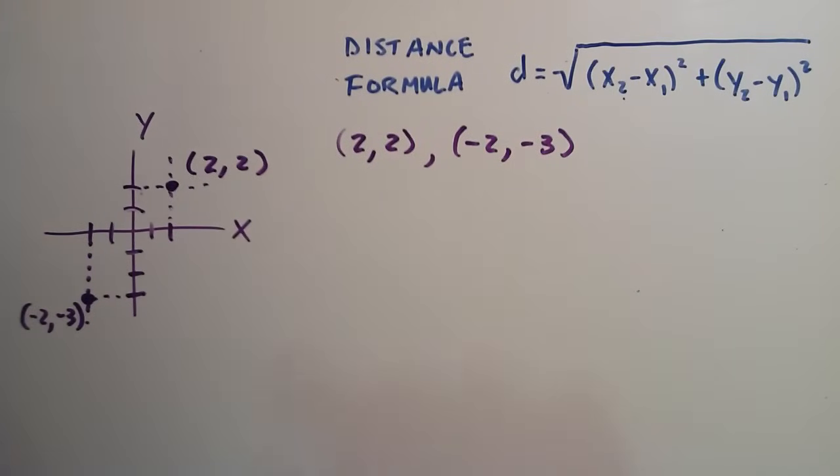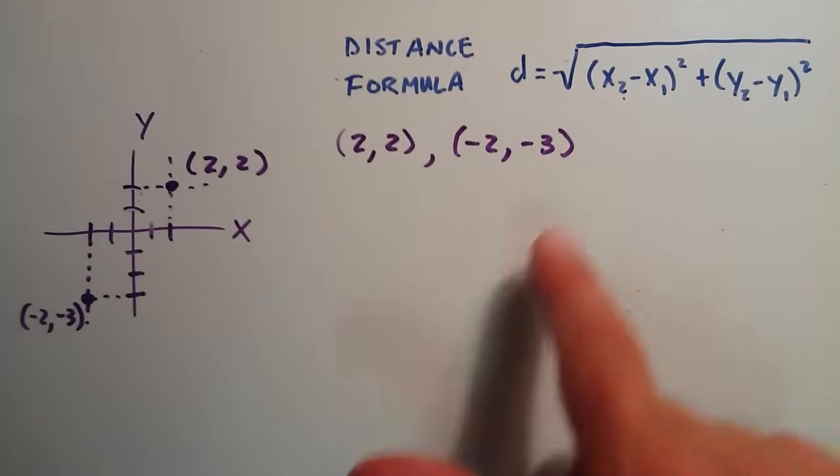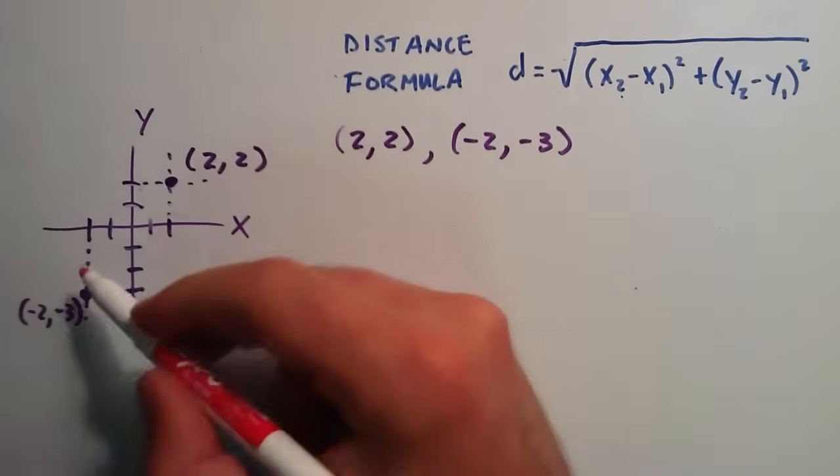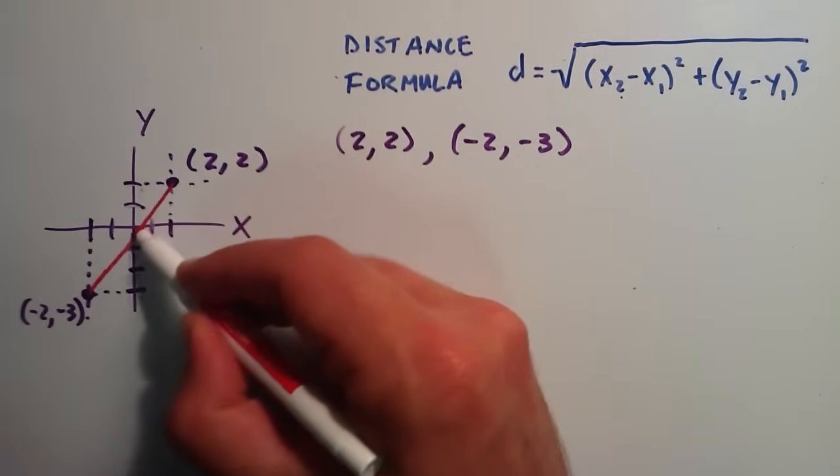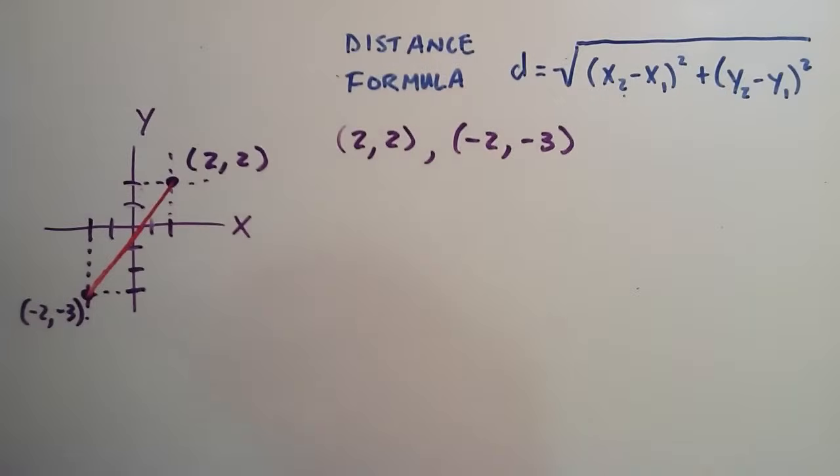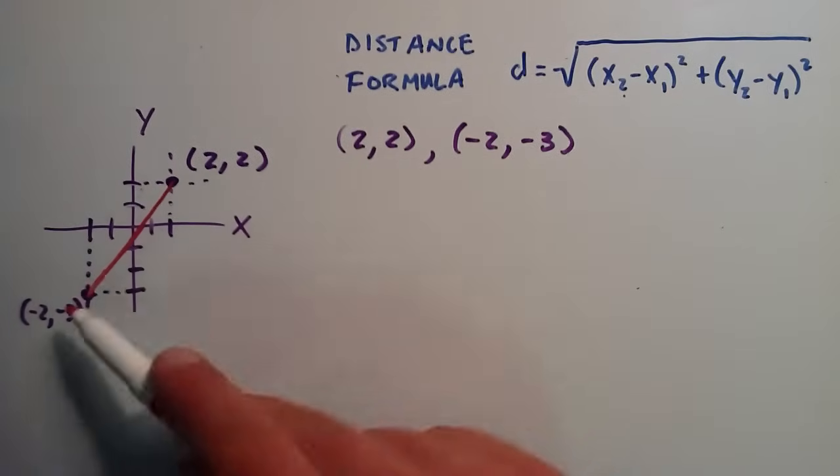So, by plugging these two points into the distance formula, we're essentially going to find the length of the line that connects the two points, or the line segment that connects the two points.